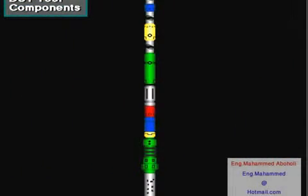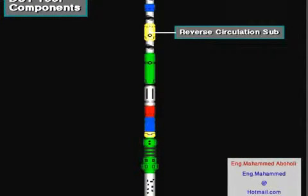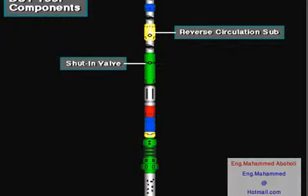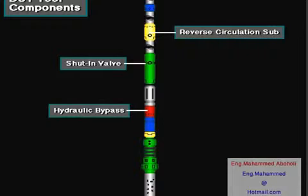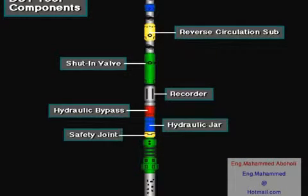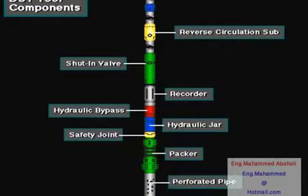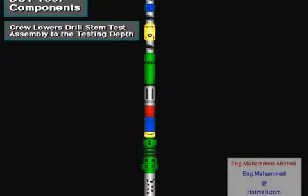Here's a drill stem test tool made up on the bottom of the drill stem. From top, it has a reverse circulation sub, shut-in valve, hydraulic bypass, recorder, hydraulic jar, safety joint, packer, perforated pipe, and an anchor shoe. The crew lowers this assembly to the depth the well owner wants to test — in this case, the bottom of the hole. You'll see what the parts do as you go along.